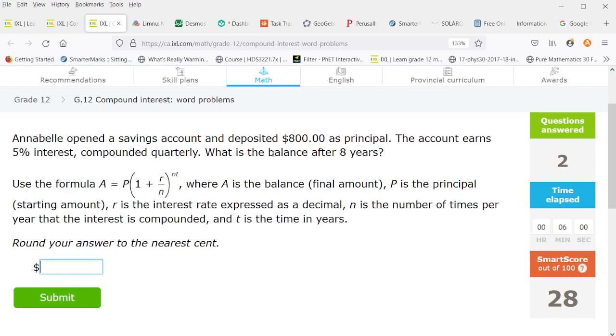Annabelle opened a savings account and deposited 800 as principal. The account earns 5% interest compounded quarterly. What's the balance after eight years? So this is 800 times one plus 0.05 for the 5% interest divided by four because it's compounded quarterly. And the exponent four times eight is 32 periods. So that's $1,190.50.